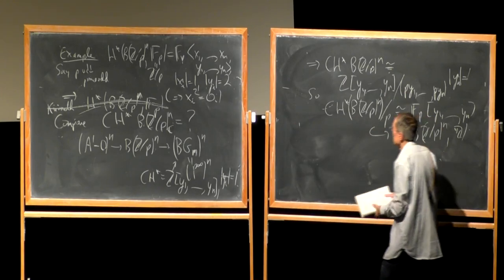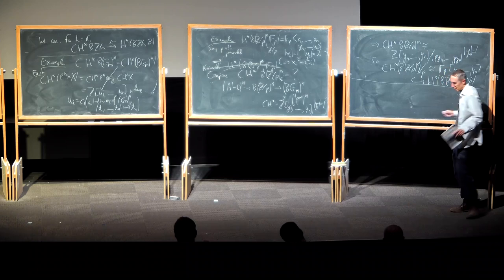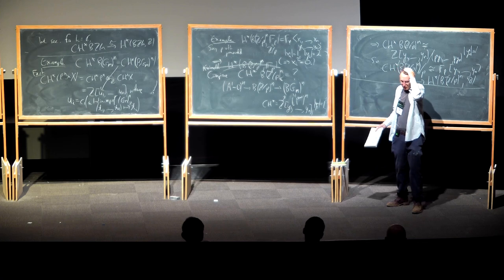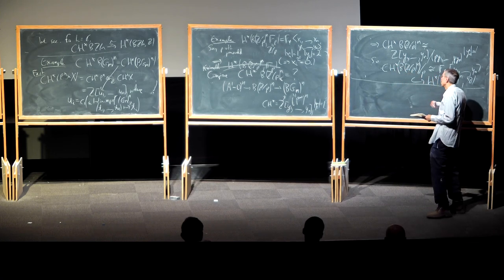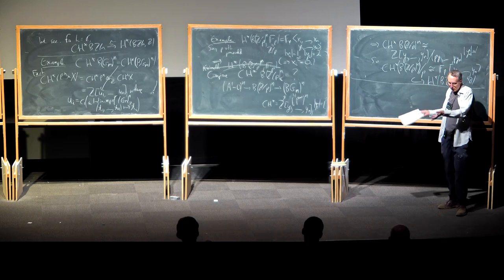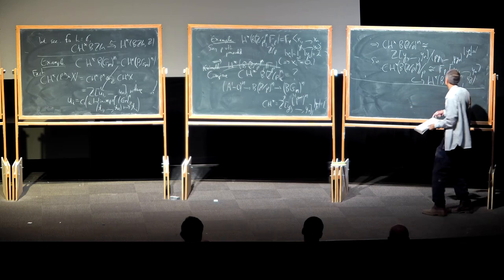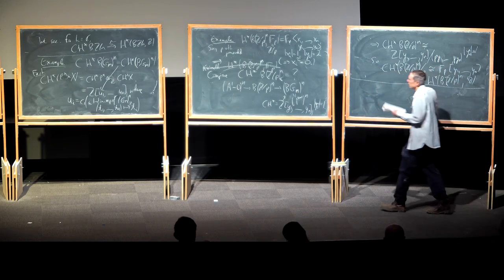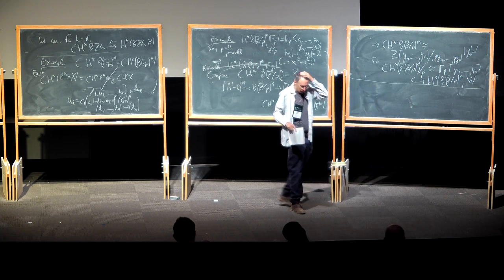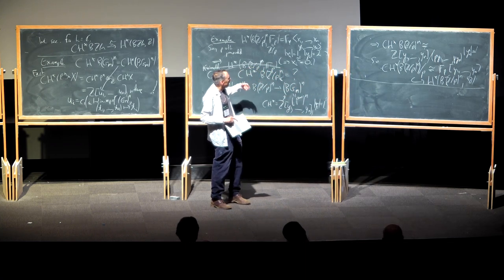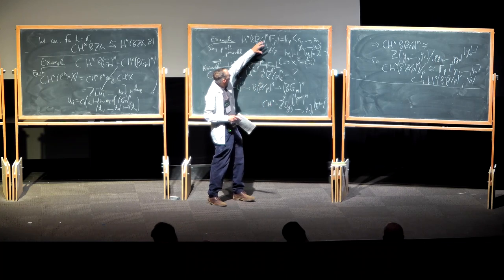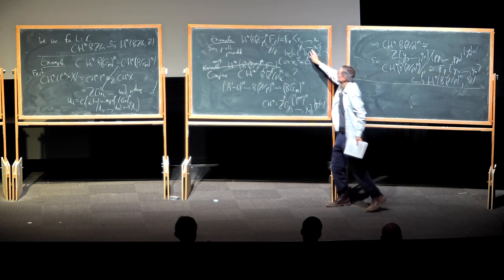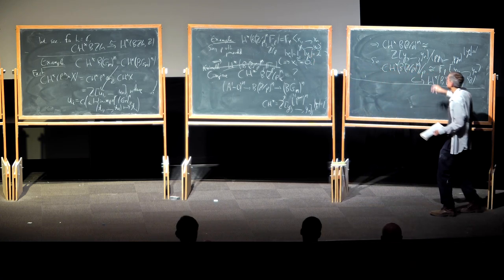In some sense, the Chow ring is revealing extra algebraic structure on BG. The space BG in topology comes from algebraic varieties, and not every class in its cohomology can be represented by an algebraic subvariety. In this case, only the y-classes — not the x-classes — are algebraic cycles. This makes sense: the Chow ring is closer to being generated by Chern classes of representations, because for any representation, its Chern classes come from elements in the Chow ring.